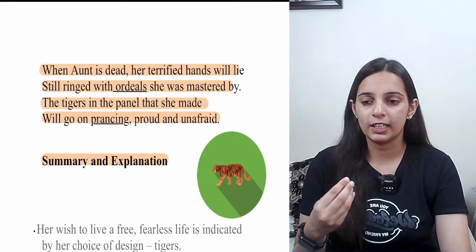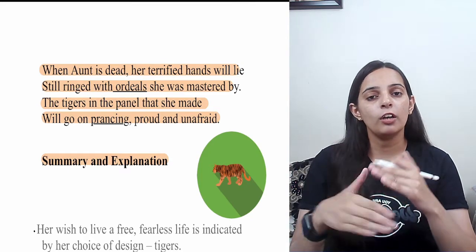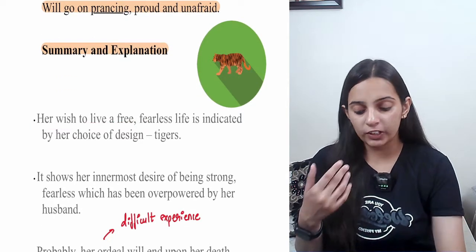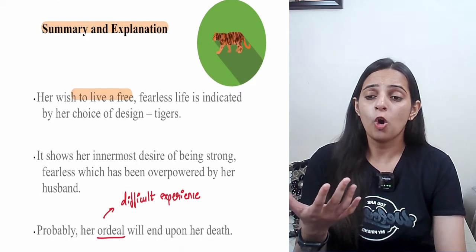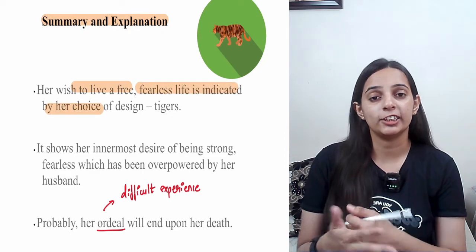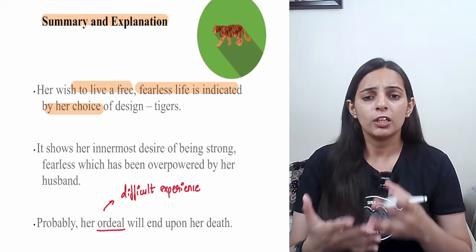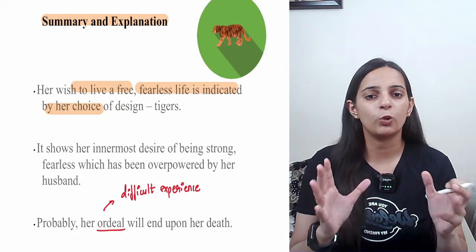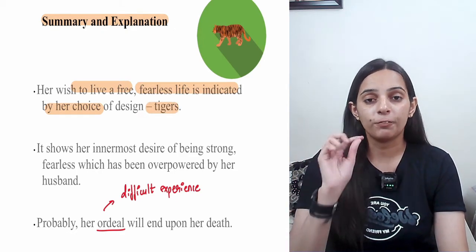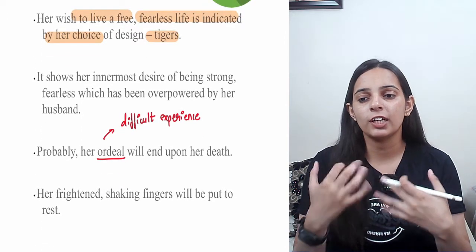Now let's look at the third stanza. 'Ordeals' means bad experiences. 'Prancing' means to take long, proud steps and walk. In simple explanation, the person wanted to live free — to live life as they want, boldly and alone, without any fear, living by their own choices. The aunt wanted to live like a tiger — fearless, without fear of her husband.